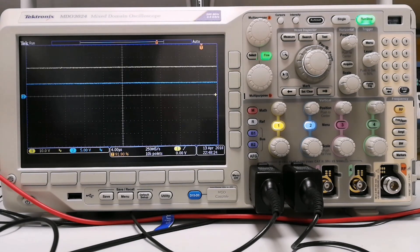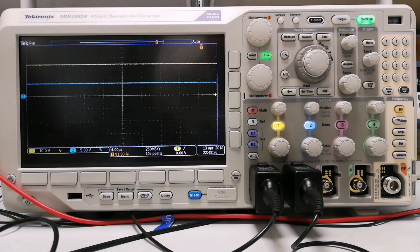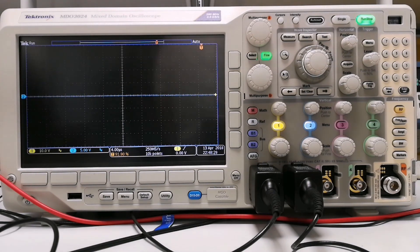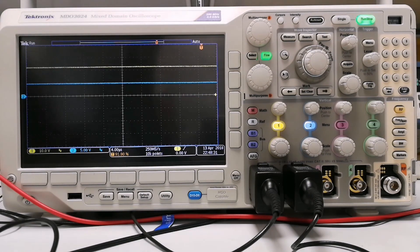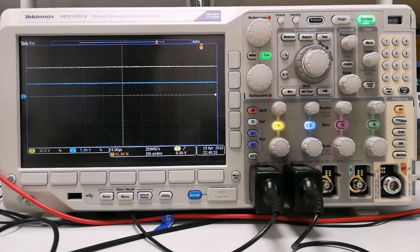From the oscilloscope you can see that similar to before, when the supply voltage increases the output voltage also increases. Once the OV-LO threshold has been reached the output voltage rapidly decreases.